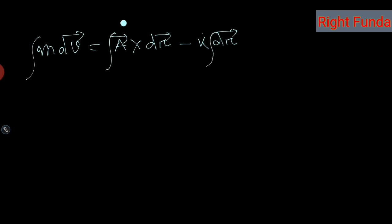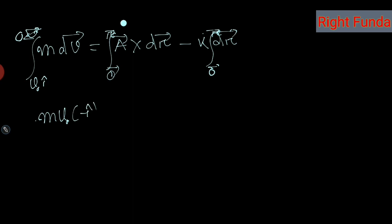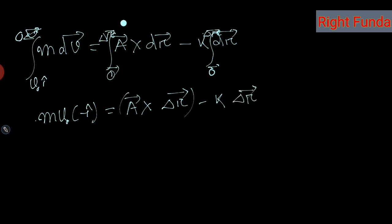Integrating both sides: initially the position vector is zero (origin) and velocity is v₀ î; finally the velocity is zero when the ball stops. The left side integrates to m·v₀ î. The right side gives A⃗ × Δr⃗ − k·Δr⃗, where Δr⃗ is the displacement vector. So: m·v₀ î = A⃗ × Δr⃗ − k·Δr⃗.